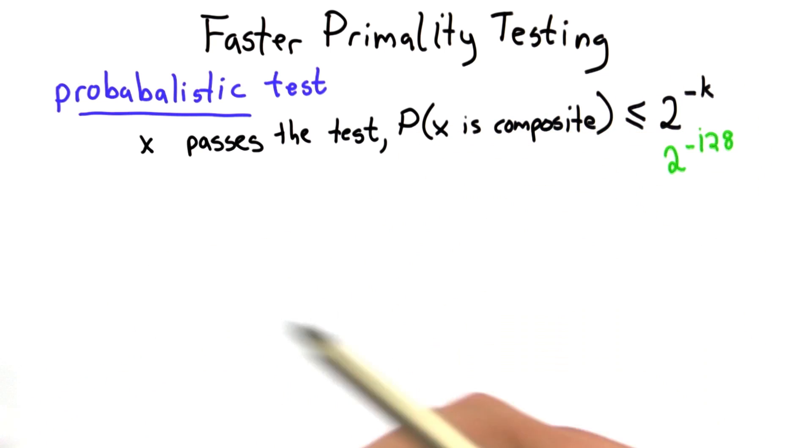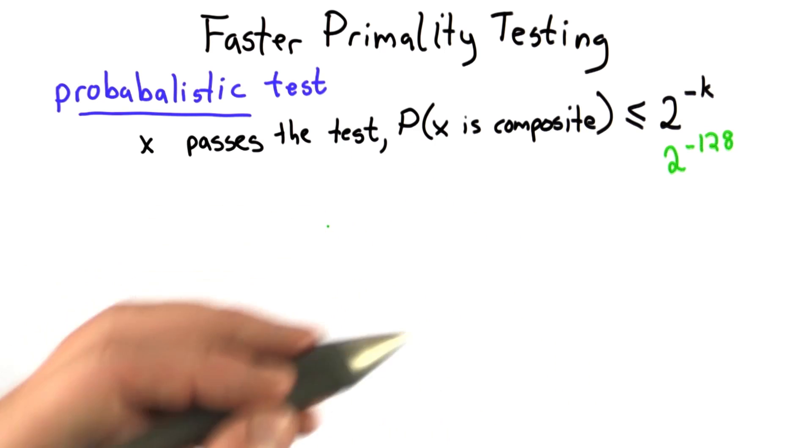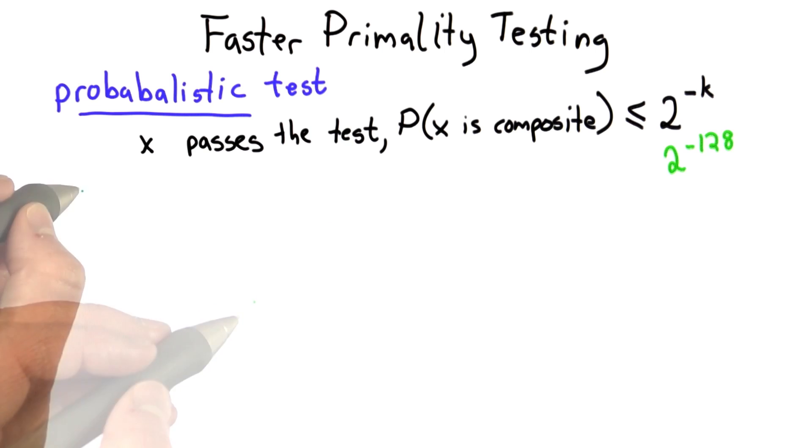One way to think about that is if the key size is 128 bits, we already have that probability that someone would randomly guess that key correctly.